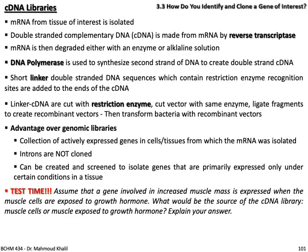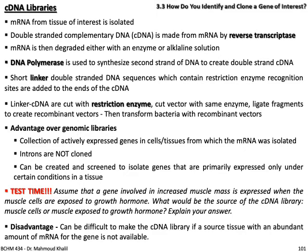Test time. Assume a gene involved in increased muscle mass is expressed when muscle cells are exposed to growth hormone. What would be the source of the cDNA library — muscle cells or muscle cells exposed to growth hormone? Explain your answer. Disadvantage: it can be difficult to make the cDNA library if the source tissue does not have an abundant amount of messenger RNA for the gene of interest.